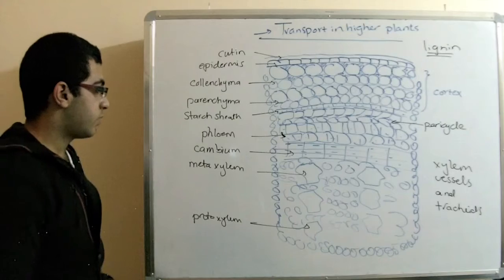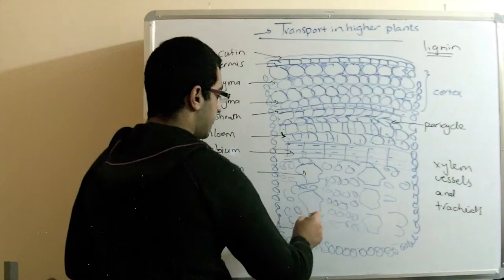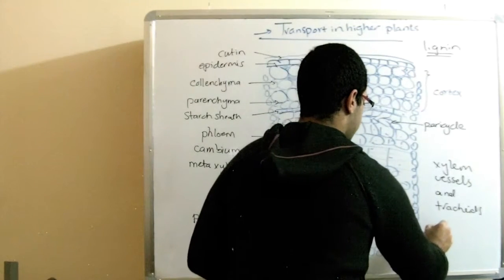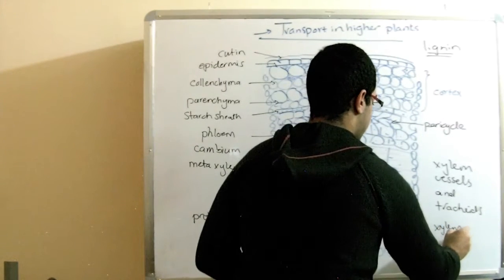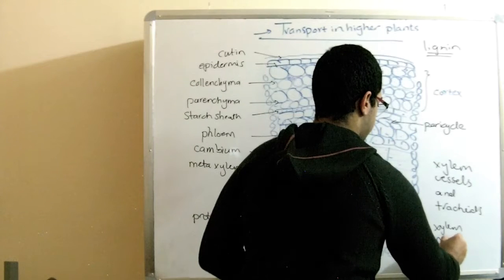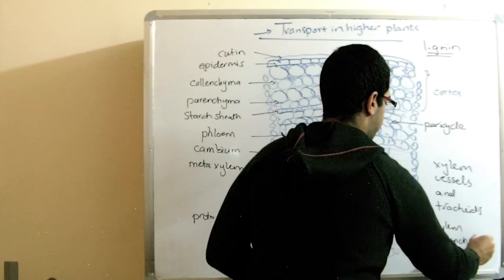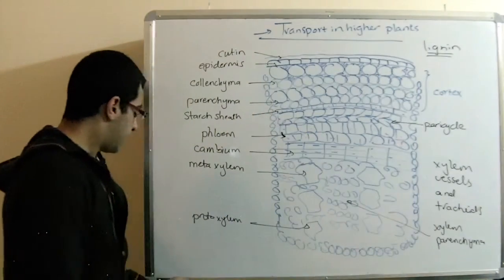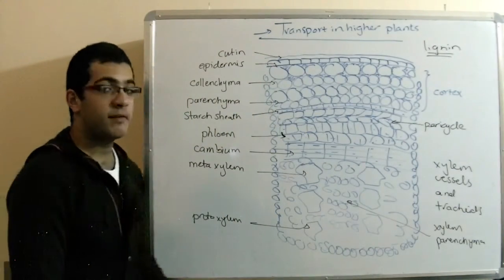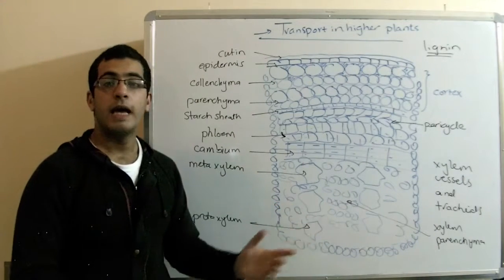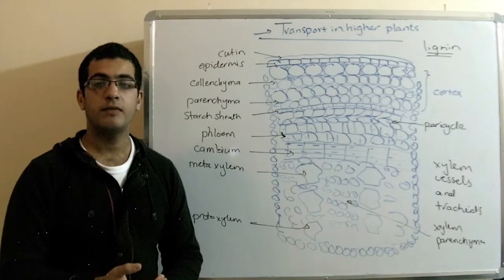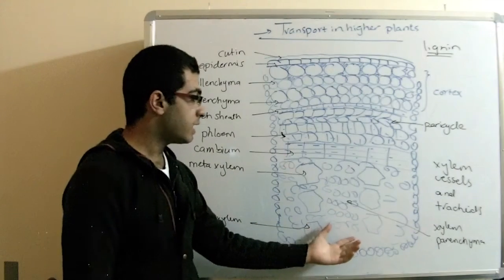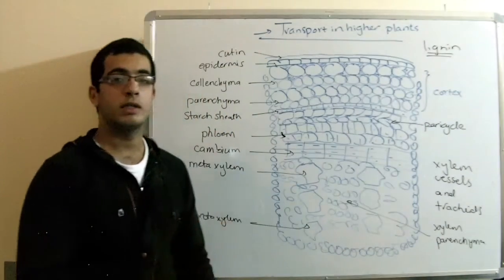The next part of the structure is called the xylem parenchyma, these cells. And actually, this xylem parenchyma has a mean of connection between the xylem inside the stem and the xylem which is found in the leaves and in the fruits and all the other parts of the plant. So, it helps in the connection between this xylem and the other xylem.